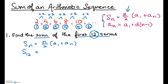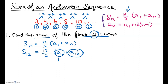Substituting 12 for n everywhere, we get S of 12 equals 12 over 2 times a of 1 plus a of 12. We need to substitute a of 1 and a of 12. A of 1 is the first term, which is 2, so we can substitute 2. But we still need to find a of 12.